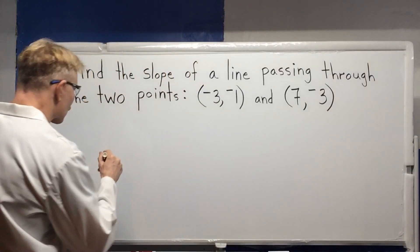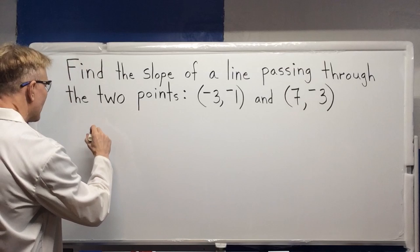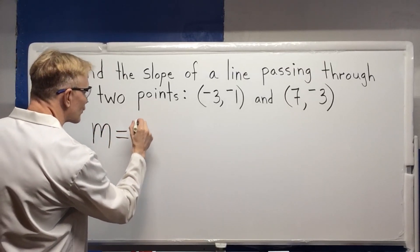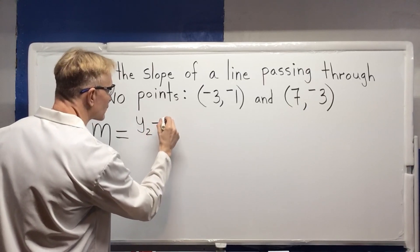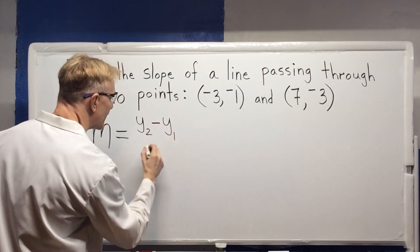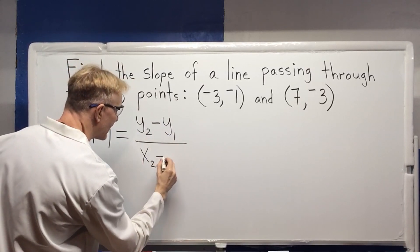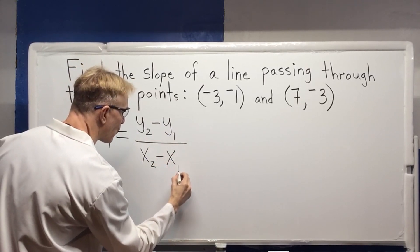First we need the slope formula. m equals y sub 2 minus y sub 1 over x sub 2 minus x sub 1.